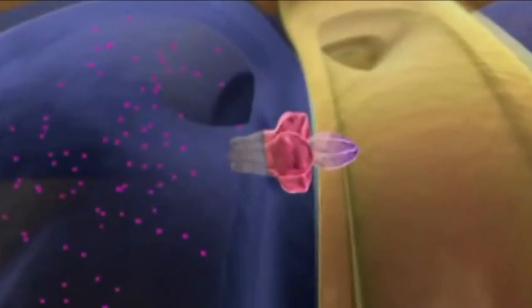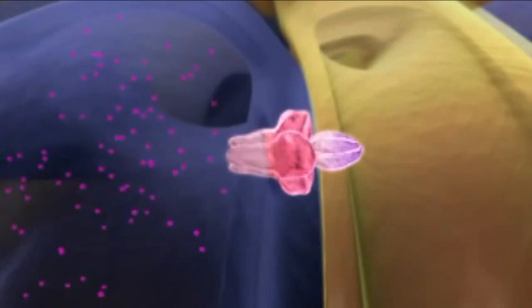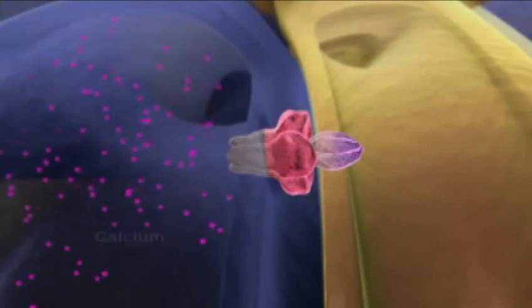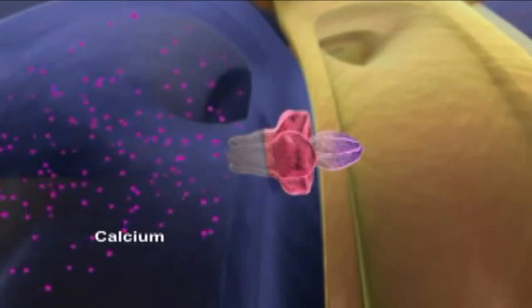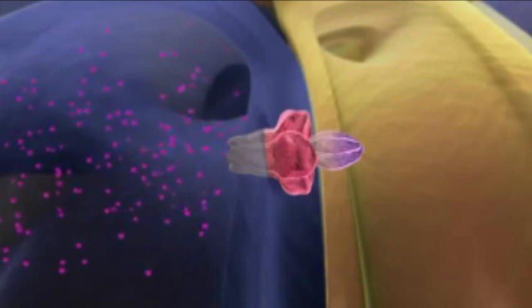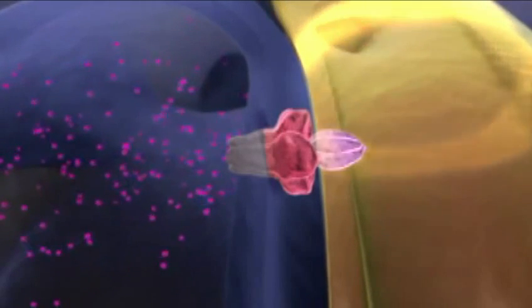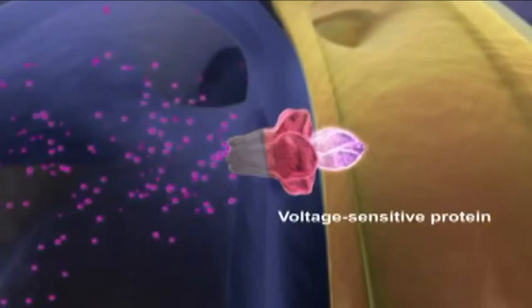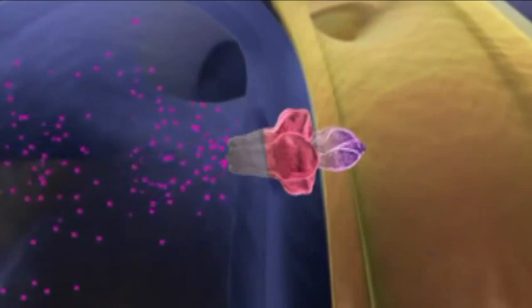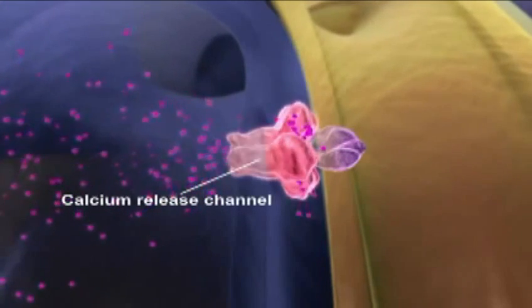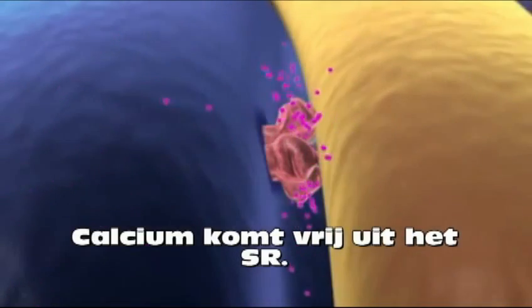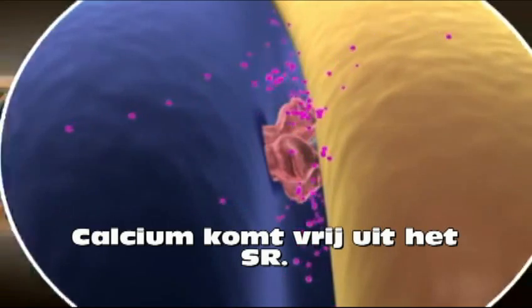The membranes of the T-tubule and terminal cisternae are linked by a series of proteins that control calcium release. As an action potential travels down the T-tubule, it causes a voltage-sensitive protein to change shape. This shape change opens a calcium release channel in the SR, allowing calcium ions to flood the sarcoplasm.